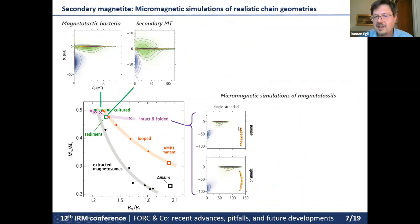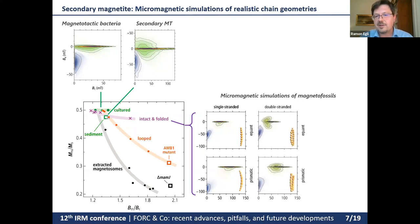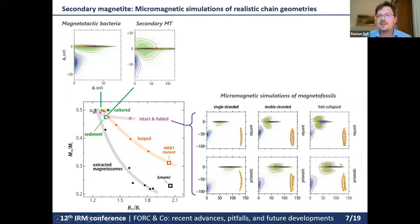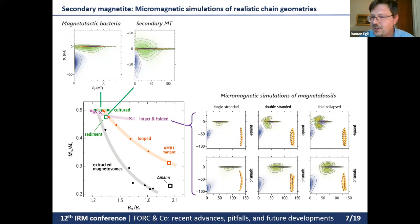We have single-stranded chains, which are usually those seen in bacteria cultured in the laboratory, and these have the typical expected signature. But we also have bacteria that produce double-stranded chains or chains with multiple strands. These individual strands interact with each other and produce lobes around the central ridge, also seen in natural magnetofossils. So you don't need to assume chains get destroyed to have this signature. Also, if an isolated chain is bent beyond its elastic limit, it will snap together because the two ends attract, generating a double chain with the same lobe signature.